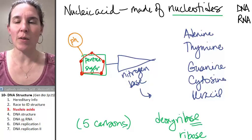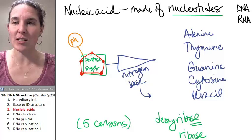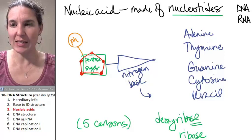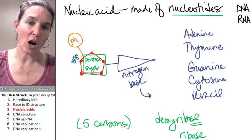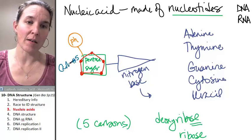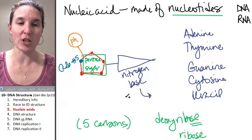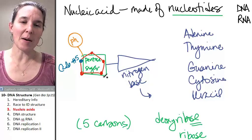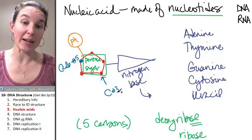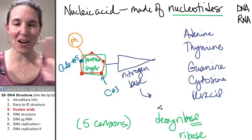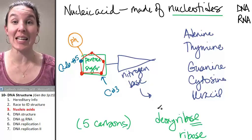I'm going to tell you that the phosphate attaches to carbon number five. This is something that you might be like going, why do we care about that? Carbon five is the carbon that the phosphate is attached to. And then another important carbon is carbon number three. That's important when we look at the overall structure of the DNA molecule.